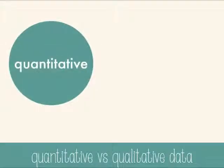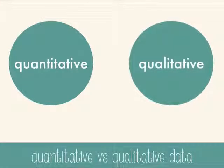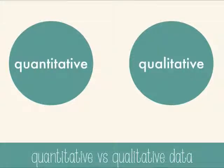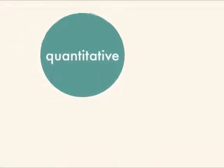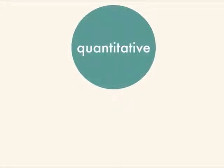Quantitative data uses numbers, like 42 elephants or 10.5 meters. Qualitative data is a description, like yellow or bubbling or soft. But we use a lot of quantitative data in science, especially in chemistry.